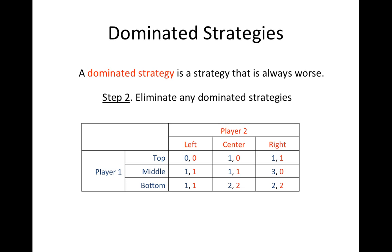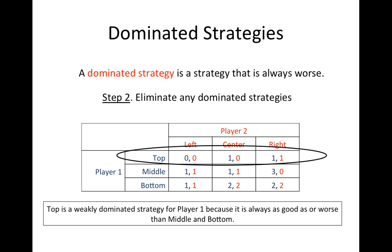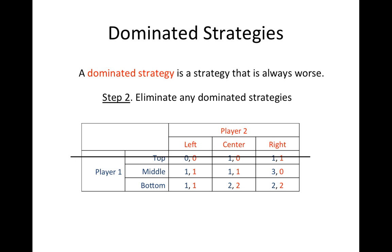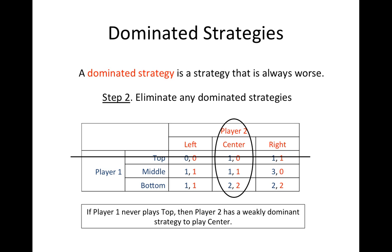For player one, playing top always gives earnings that are the same as or worse than both middle and bottom. Thus, for player one, we say that the strategy top is a weakly dominated strategy, and we can eliminate it as one of the strategies that player one is likely to play. Now that we have eliminated top, we should consider the game from player two's perspective. If player two knows that player one will never play top, then for player two, center is always at least as good or better than either left or right. We say that player two has a weakly dominant strategy to play center. Given this, player one should play bottom. Therefore, by eliminating dominated strategies, we have found the equilibrium outcome of this game.